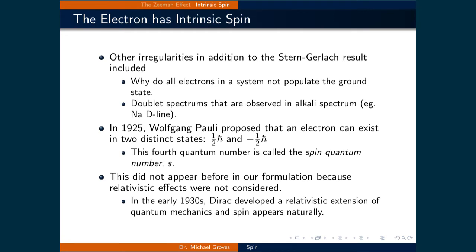Other irregularities, in addition to the Stern-Gerlach result, included why do all electrons in a system not populate the ground state? It was also observed that certain transitions had two very closely spaced lines, called doublets. The most used example of this is the sodium D-line spectrum.